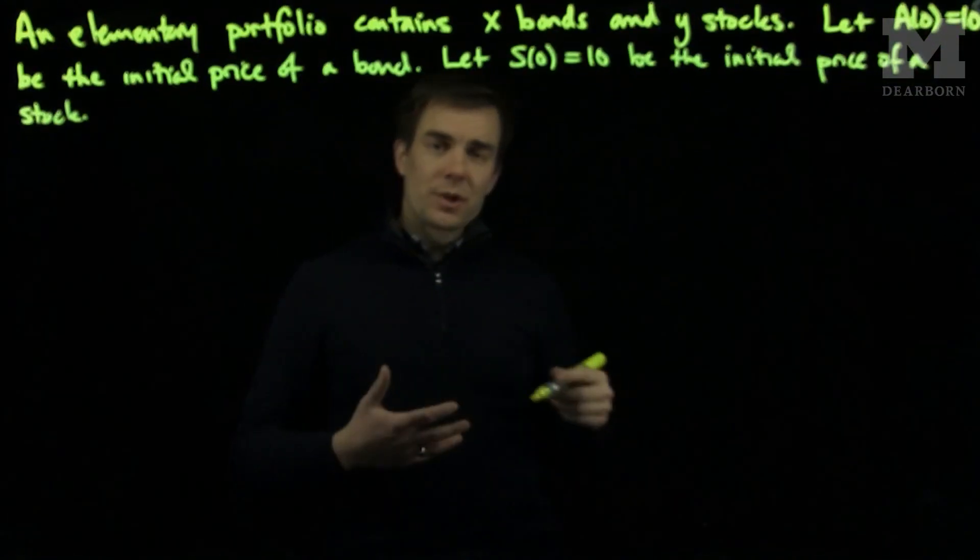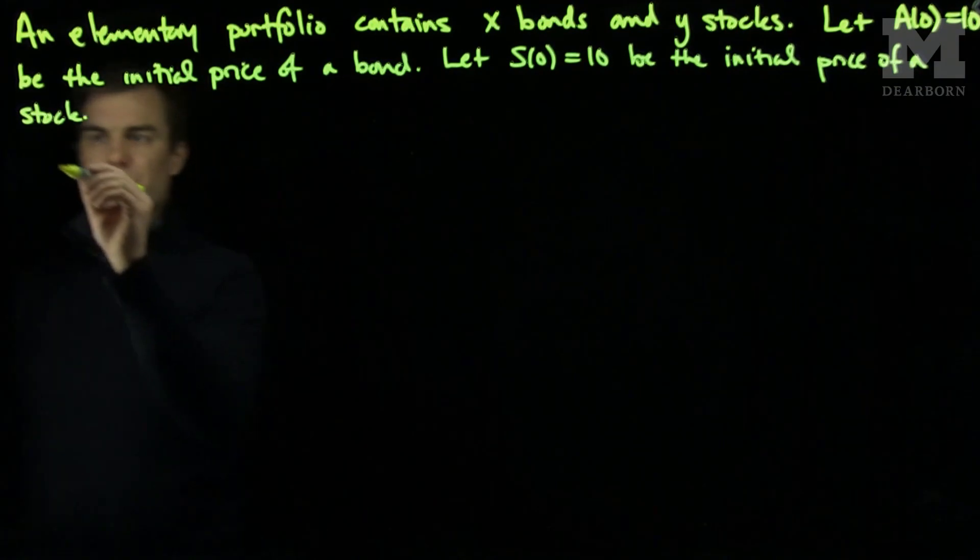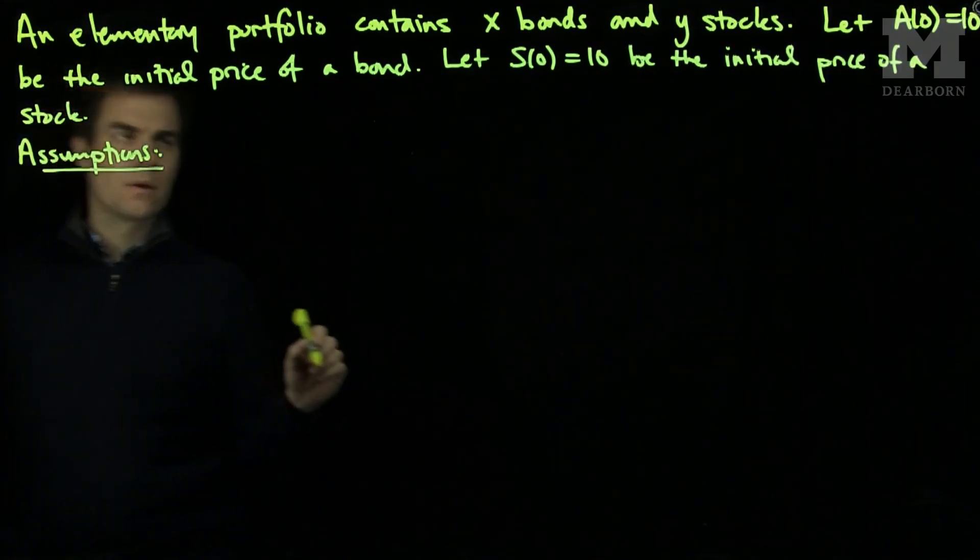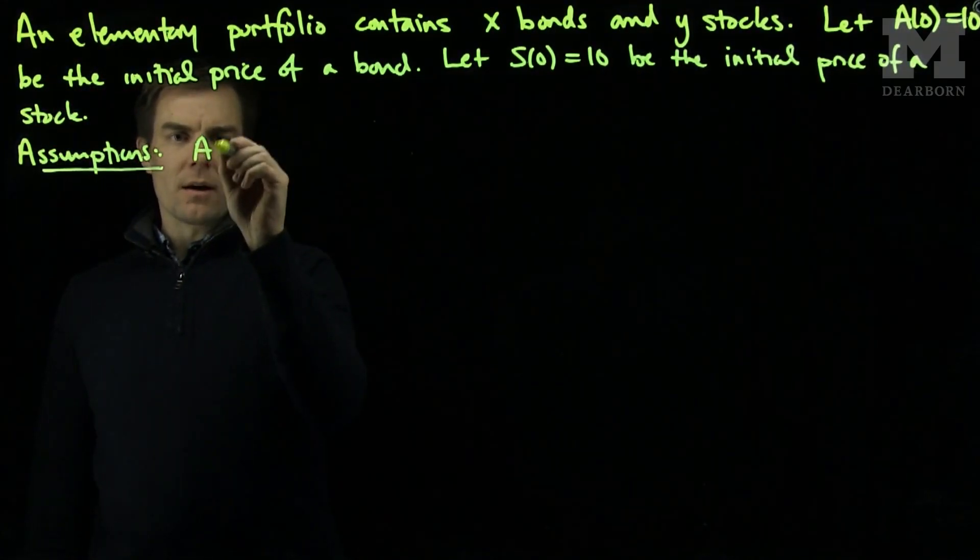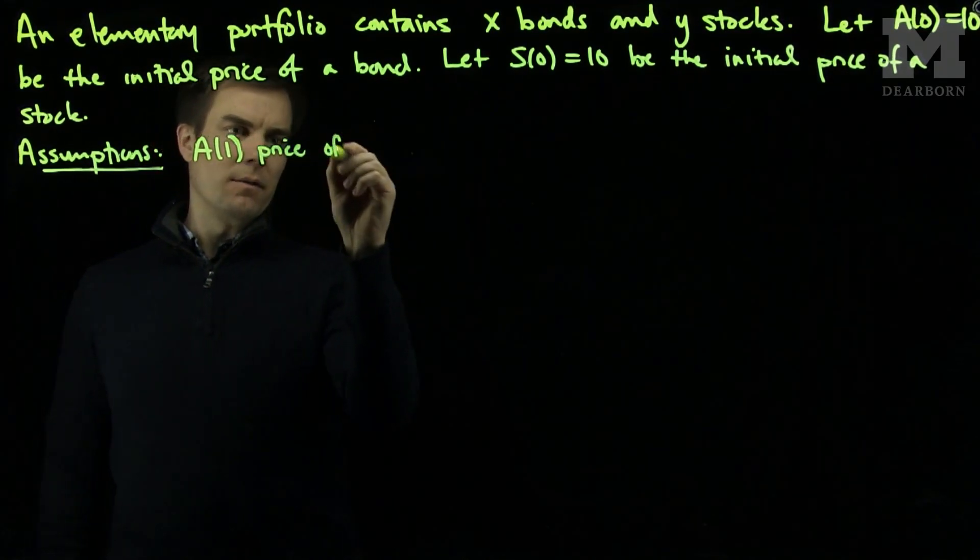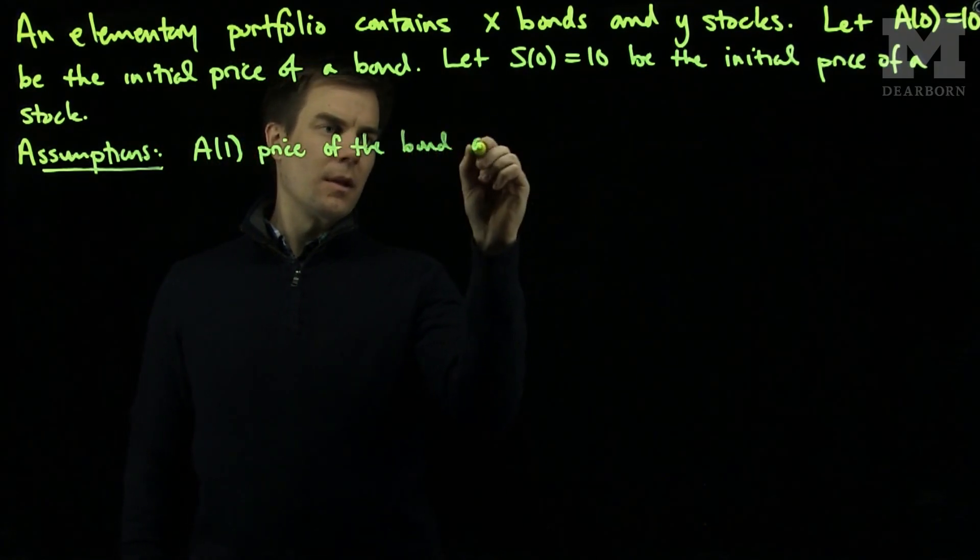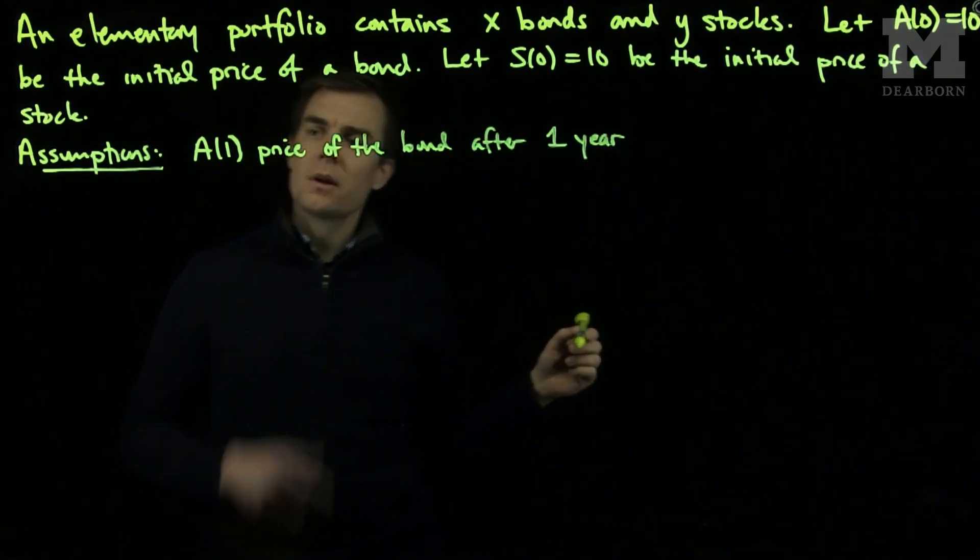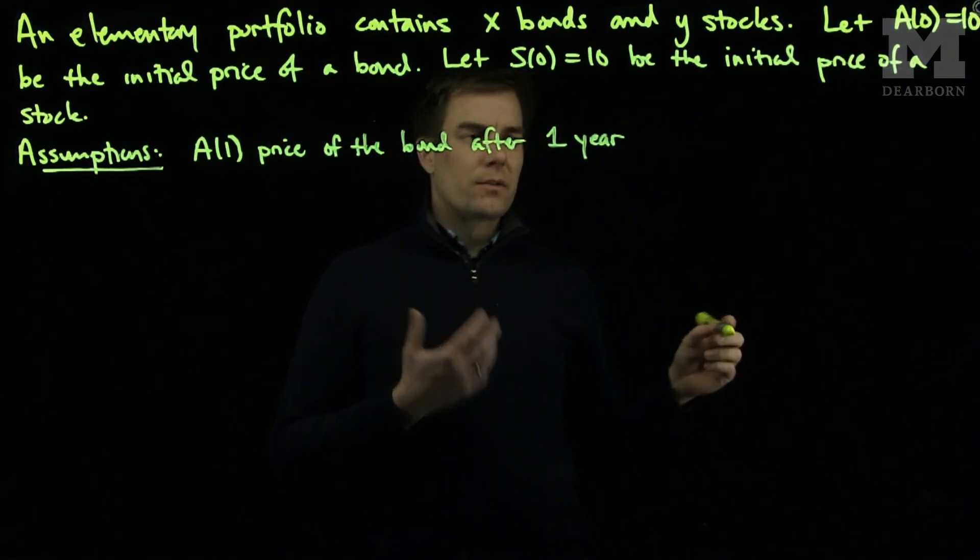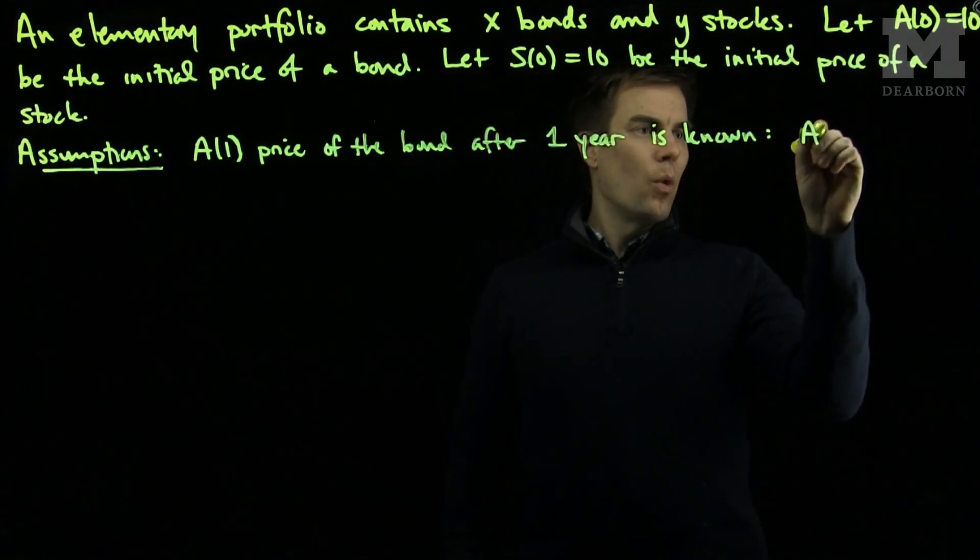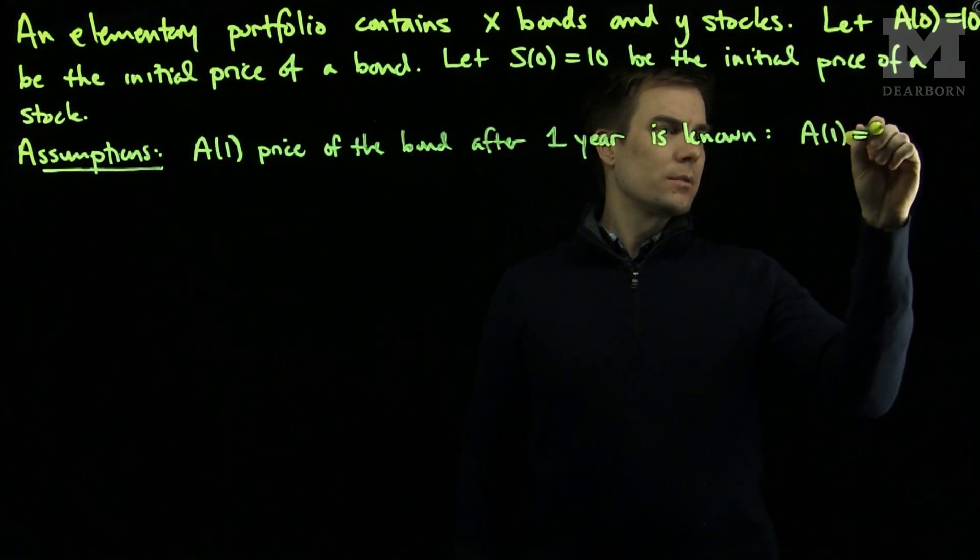Now what we'll do is make some assumptions that sort of model the physical world. We're going to assume that A(1), the price of the bond after one year, is known. And we'll say that A(1) is 12.